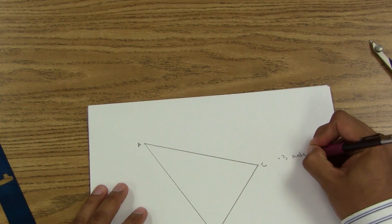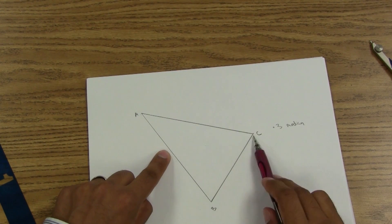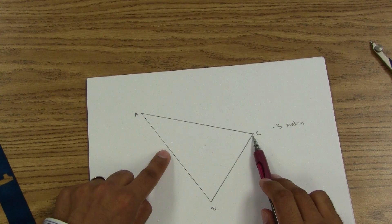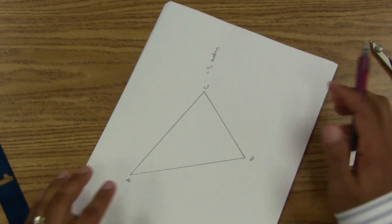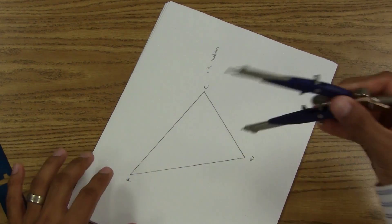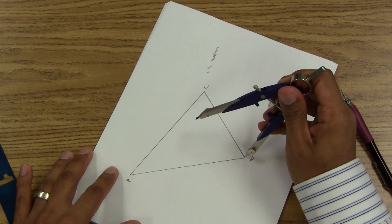Now, medians go from a midpoint to the opposite vertex. So I'll first have to find the midpoint, and this time I'll find AB. So do this one with me, let's go ahead and get that midpoint.